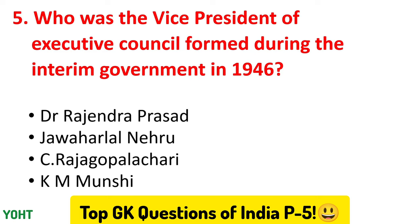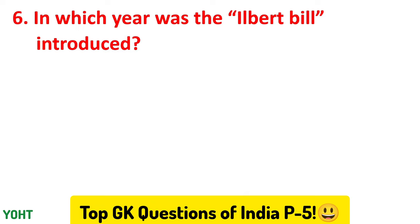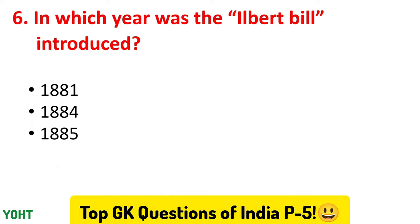Let us jump to the sixth question. In which year was the Ilbert Bill introduced? The options are 1881, 1884, 1885, and 1886. The correct answer to this question is option number two, 1884.